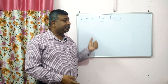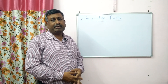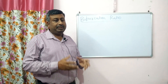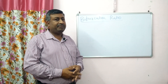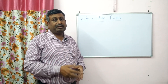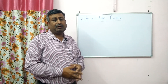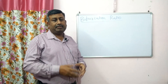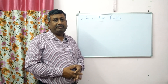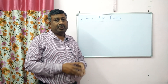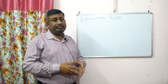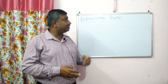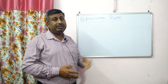This is the bifurcation ratio and it is a very important characteristic of a watershed. This ratio indicates the drainage density, runoff characteristics, and discharge characteristics. Runoff characteristics can be assessed by the bifurcation ratio.